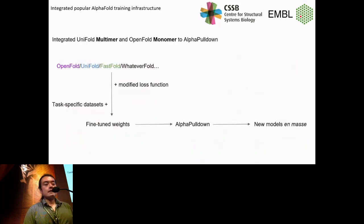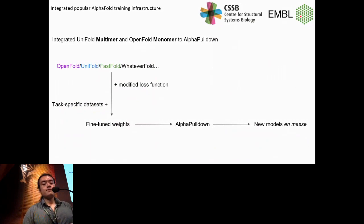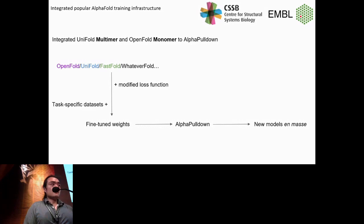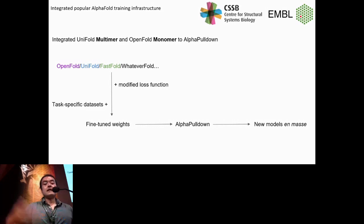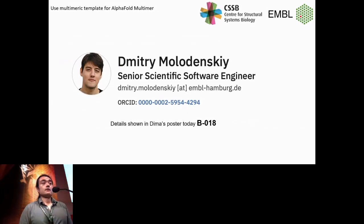Another major update is integration of popular AlphaFold fine-tuning infrastructure. Since DeepMind didn't release training code, third-party PyTorch-based implementations like OpenFold and UniFold have emerged. Researchers fine-tuning AlphaFold weights for custom tasks can now use AlphaPulldown to run large-scale jobs with their fine-tuned models and get organized summaries.